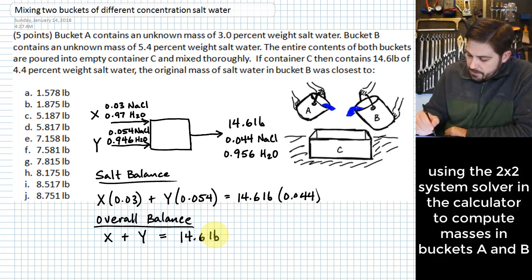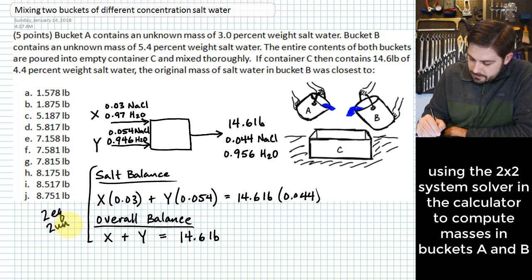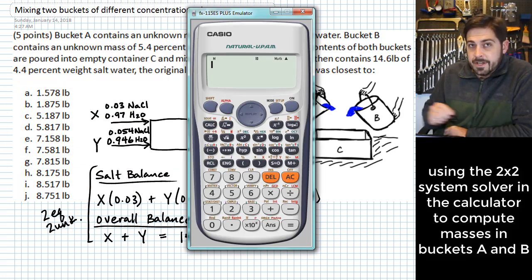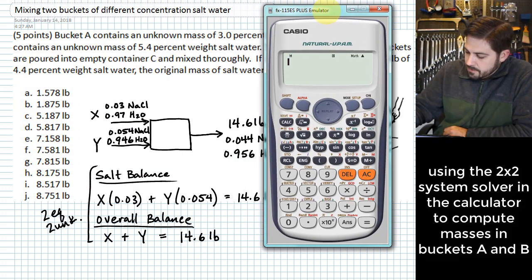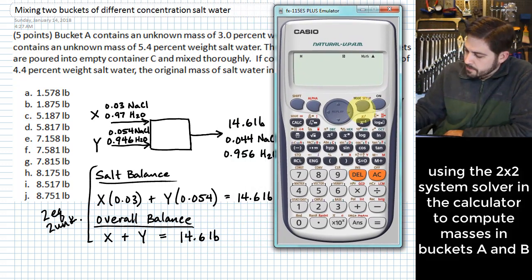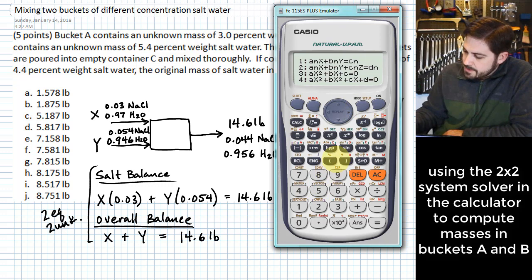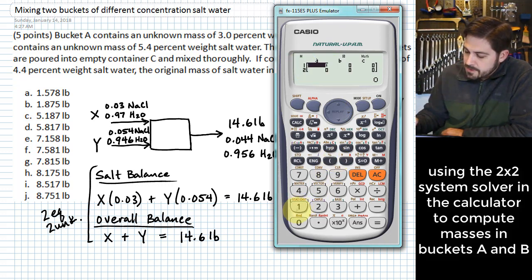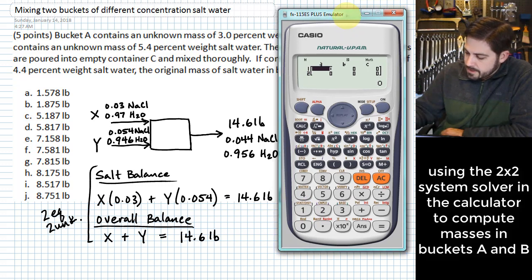All right so these are two equations and two unknowns. All right what we do with that is we pull up a calculator and we can punch into this calculator the things that we know. So mode 5 gets us to these equations. The first option you see there is the 2 by 2 and we need to plug in the things that we know.